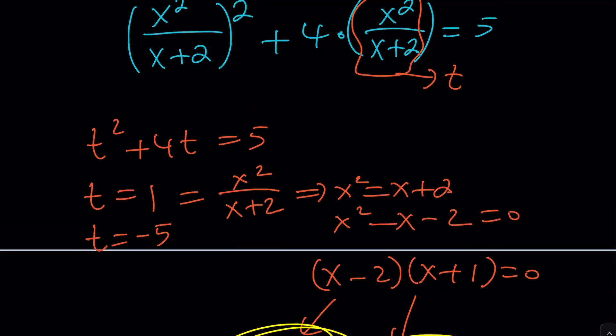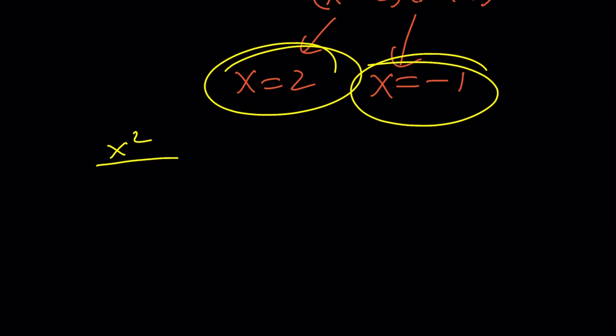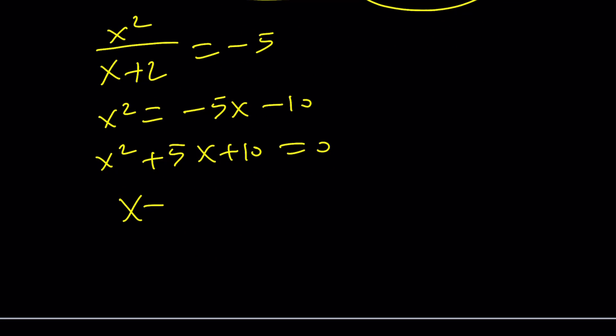We can also set t equal to -5, which is x²/(x+2). If you set equal to -5, you get x² = -5x - 10. And then x² + 5x + 10 = 0. And from here, by using the quadratic formula, -b ± √(b²-4ac), uh-oh, we get a negative discriminant, which means we're going to end up with complex solutions, non-real.